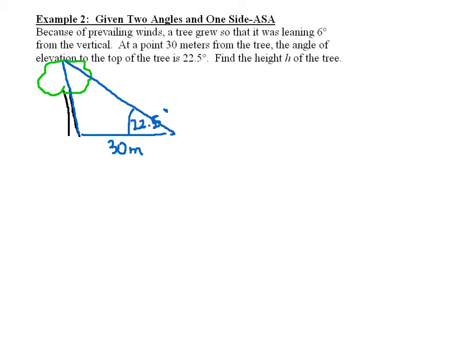Well if your tree has been blown over by 6 degrees from the vertical, that means this is 6 degrees right here, and this is already 90, so your entire angle is going to end up being 96 degrees for that angle.